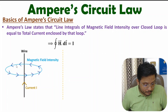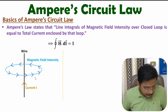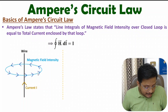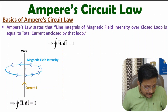So here if you keep your thumb in the direction of current, then magnetic field intensity is rotating like this. As per Ampere's Circuit Law, if you do the line integral of this magnetic field intensity over the enclosed loop, then that equals the total current inside this loop. So total current inside this loop is I, and the line integral of magnetic field intensity over the closed loop equals that current I passing through this wire.